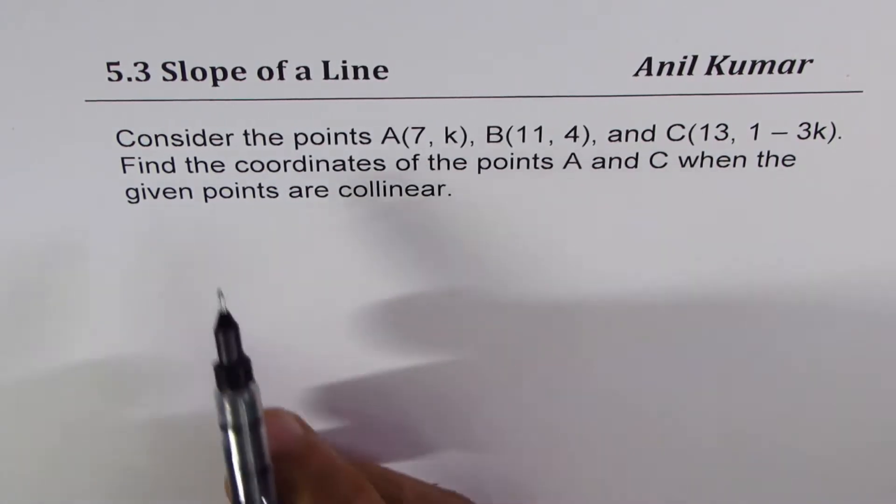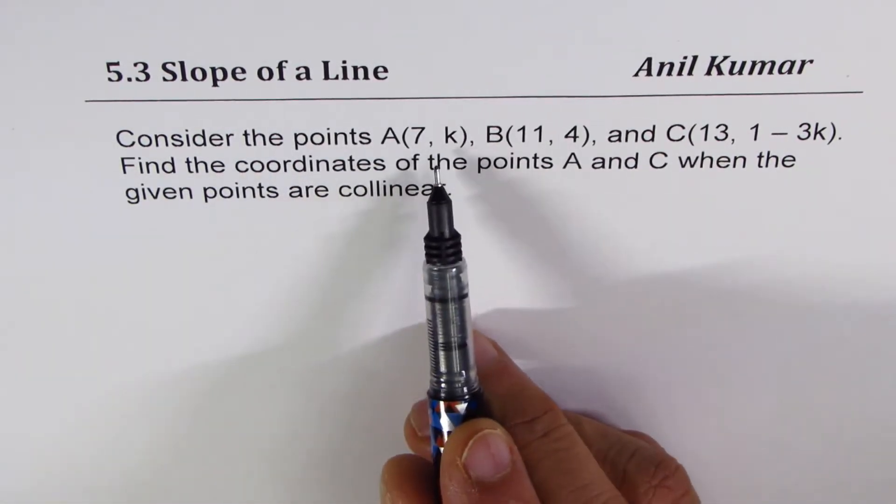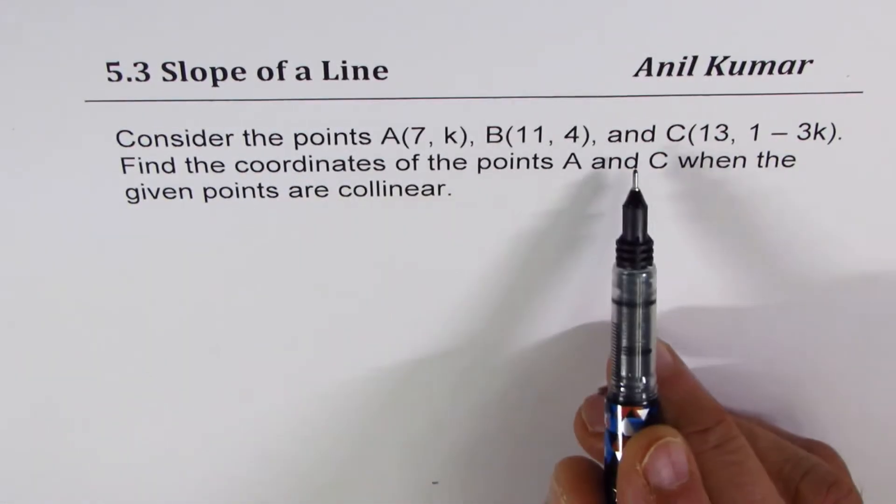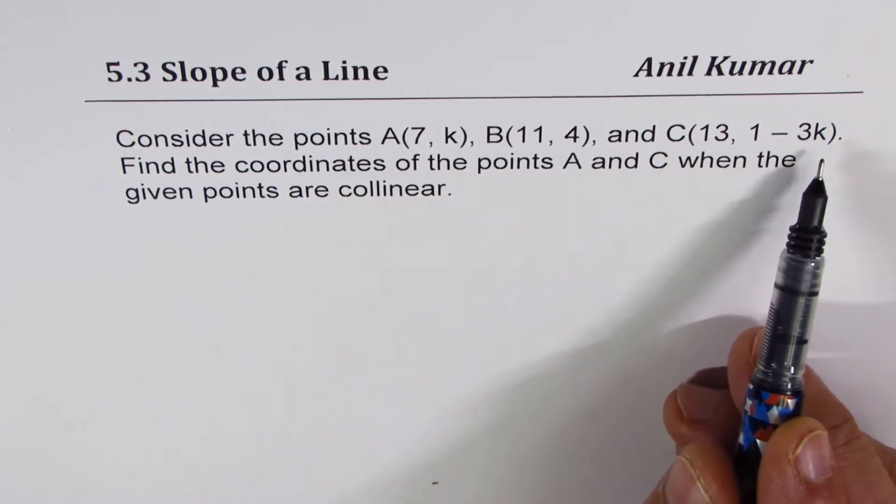The question here is, consider the points A(7, k), B(11, 4), and C(13, 1 minus 3k).